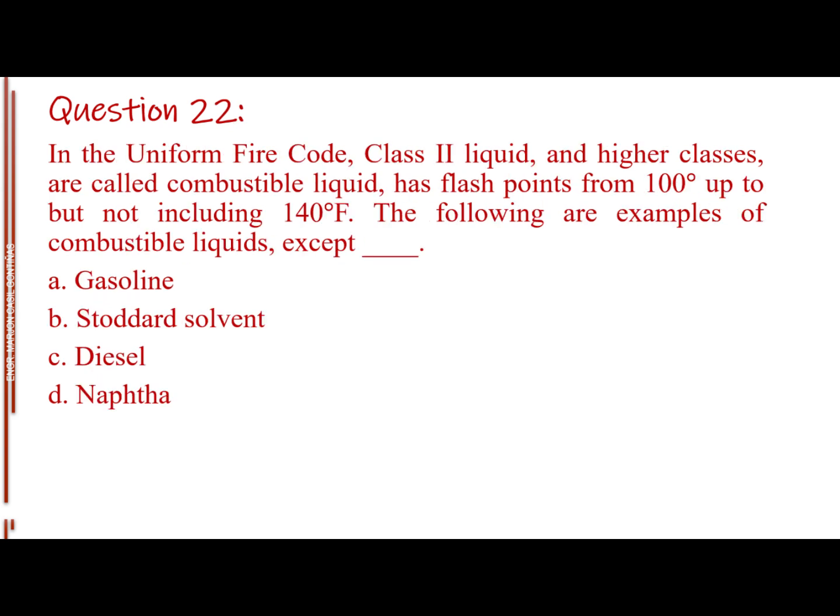Question number 22. In the uniform fire code, class II liquid, and higher classes, are called combustible liquid, has flash points from 100 degrees up to but not including 140 degrees Fahrenheit. The following are examples of combustible liquids, except blank. Letter A, Gasoline. Letter B, Stoddard solvent. Letter C, Diesel. Letter D, Naphtha. The answer is Letter A, Gasoline.